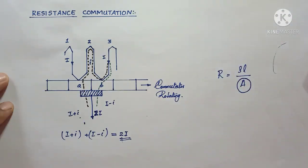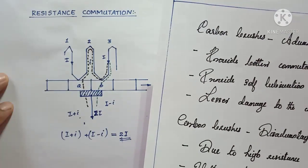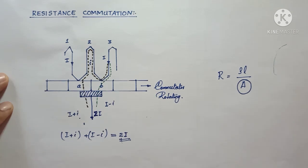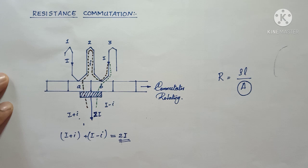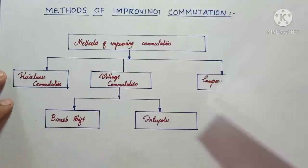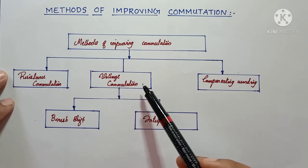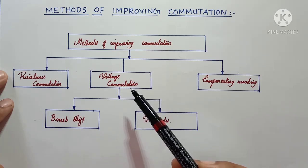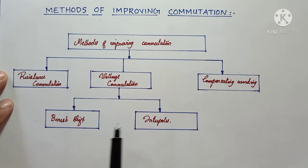We must remember that if we are using high-resistance carbon brushes, we cannot completely avoid sparking in the brushes — but we can reduce it. In the next video, we will discuss voltage commutation or EMF commutation, and how this method can be used to further improve commutation.